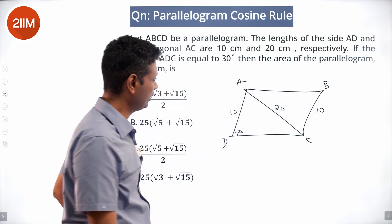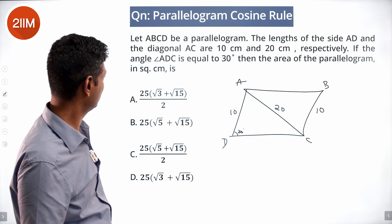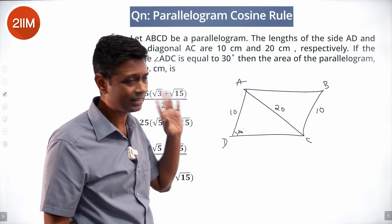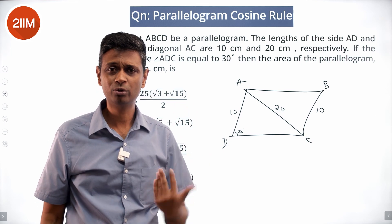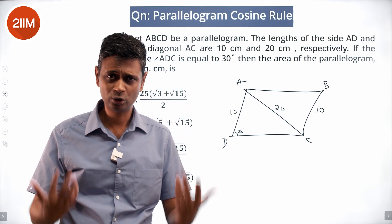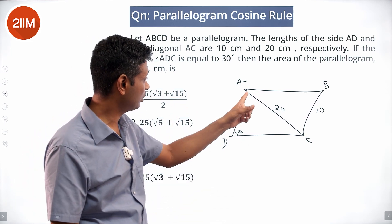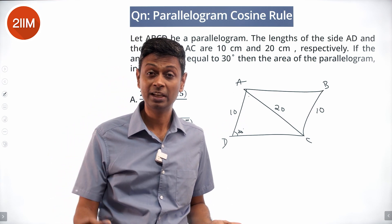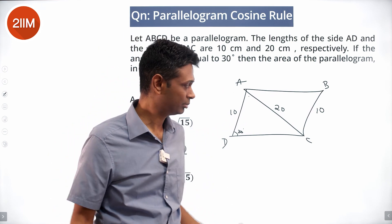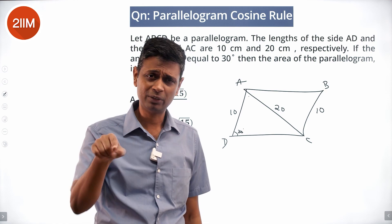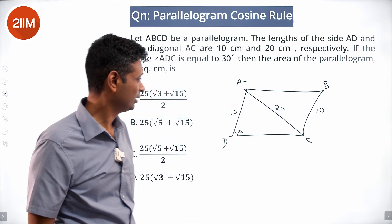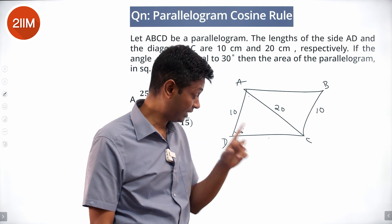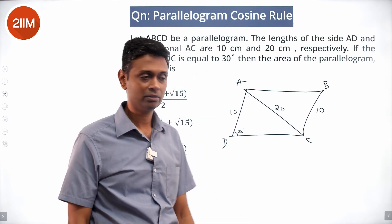We need to find base into height, but we don't know the height. I thought of using some trigonometry to find the height, but there is no direct way. If this angle were 30, it'd be brilliant — half times BC times sine A and we'd be through. It is not, so we have to find some other way. We can find this using the cosine rule — somehow manage and find this side.